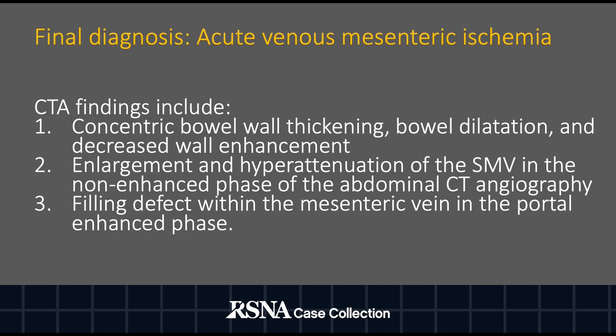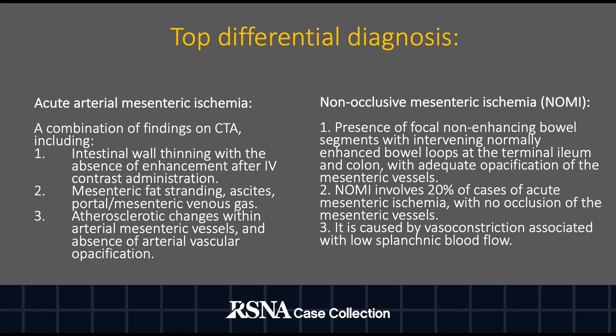The final diagnosis is acute venous mesenteric ischemia. CTA findings include concentric bowel wall thickening, bowel dilatation, decreased wall enhancement, enlargement and hyperattenuation of the SMV in the non-enhanced phase, and a filling defect within the mesenteric vein in the portal-enhanced phase. Top differential diagnoses are acute arterial mesenteric ischemia and non-occlusive mesenteric ischemia, with diagnostic findings listed accordingly.